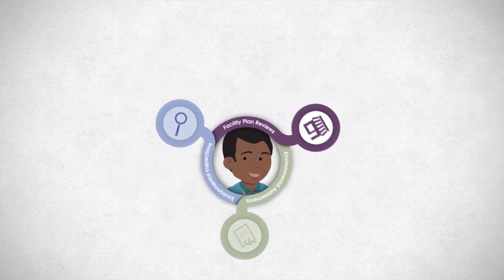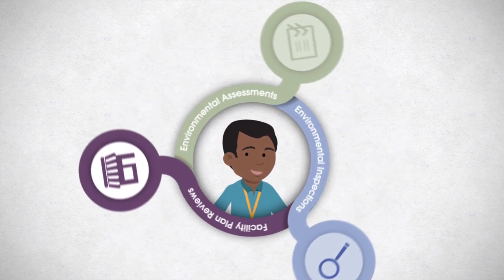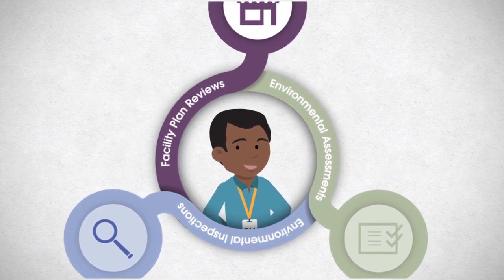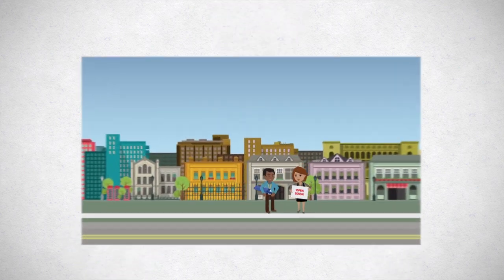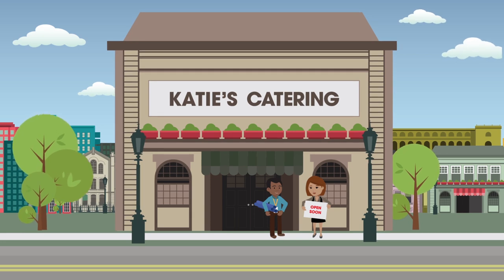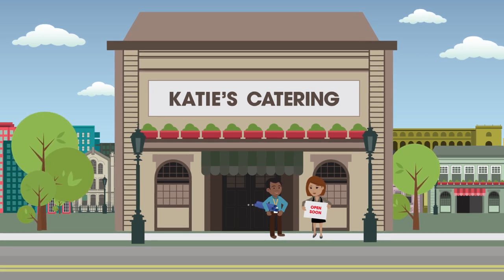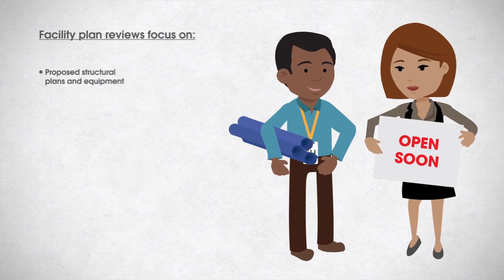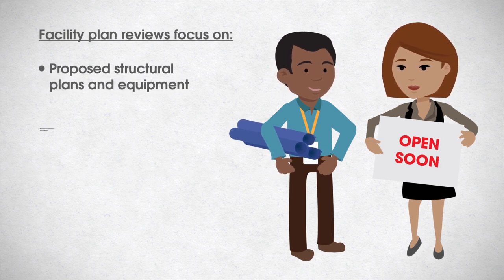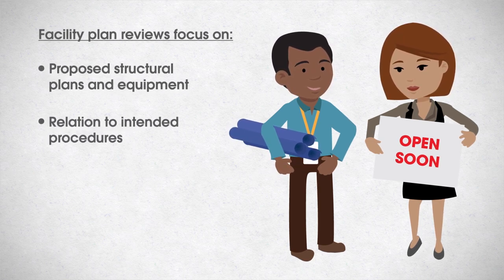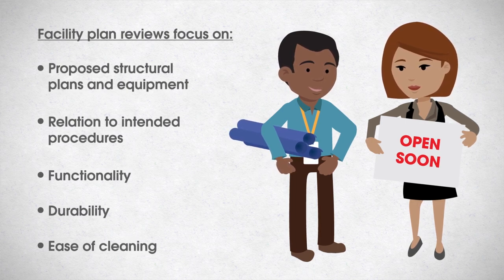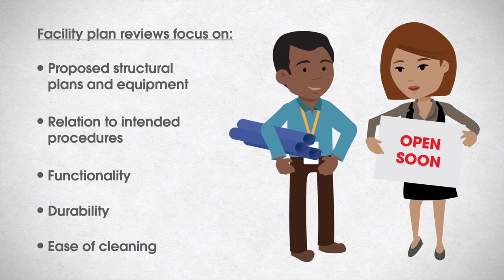Let's discuss the differences between facility plan reviews, inspections, and environmental assessments. A facility plan review is a preemptive activity to identify and mitigate potential food safety problems in the future. They are undertaken to promote healthy and safe food system environments and operations to reduce risks to human health. They focus on proposed structural plans and equipment at the establishment in relation to intended procedures, functionality, durability, and ease of cleaning. Facility plan reviews are initiated by establishments.